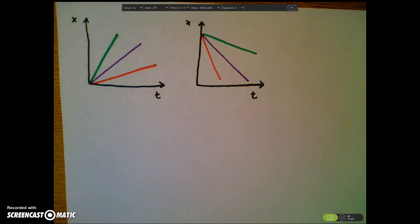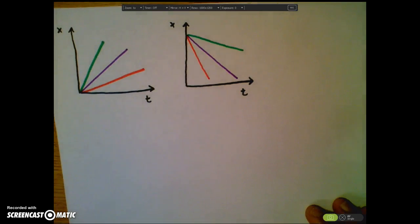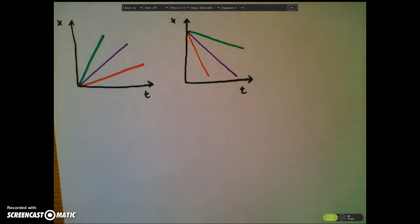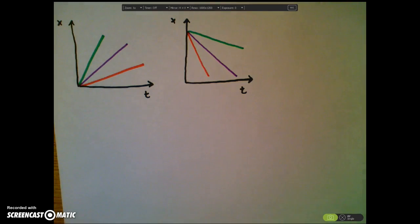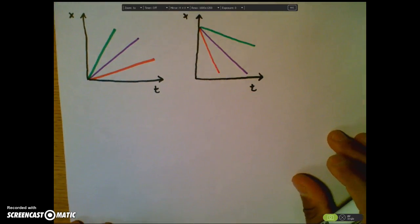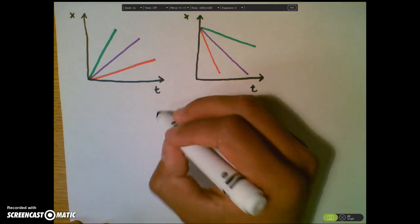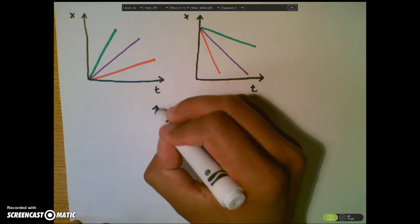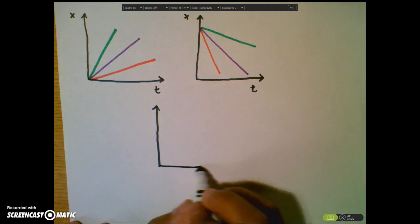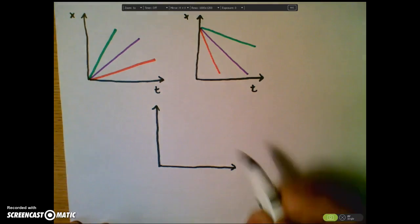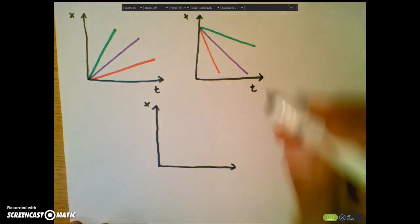In that case, the red object would be traveling the quickest in the negative direction, then the purple, then the green. Now, what if I were to take these objects, and instead of making them separate objects, I make it one object whose slope is changing?